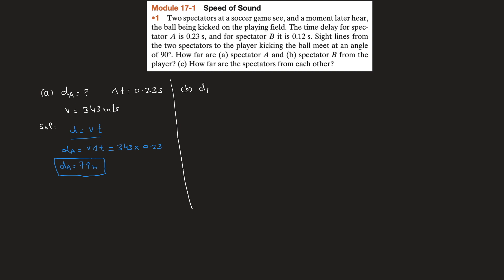For d_b: delta t equals 0.12 seconds and velocity is 343 meters per second. Using the same equation d = v × t, d_b equals 343 multiplied by 0.12, which gives 41 meters. This is the answer for spectator B's distance from the player.